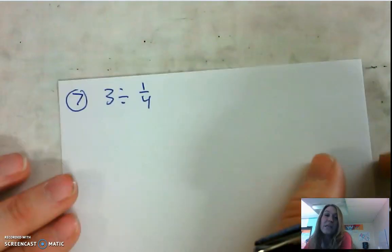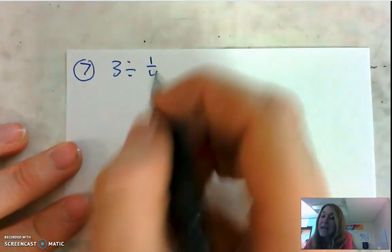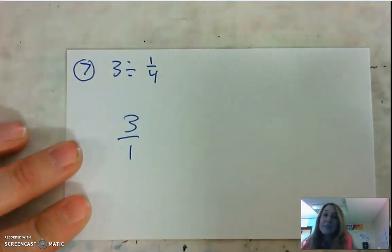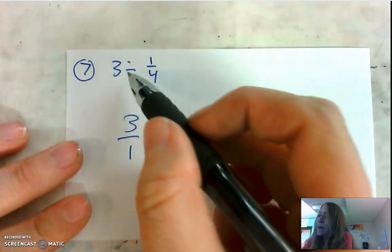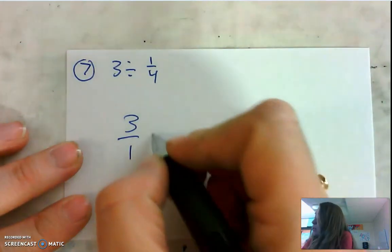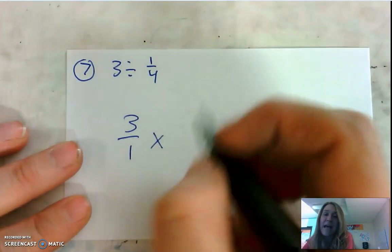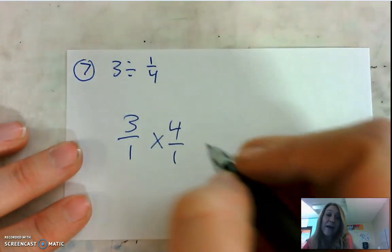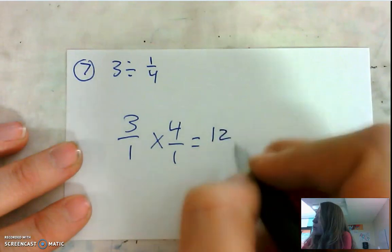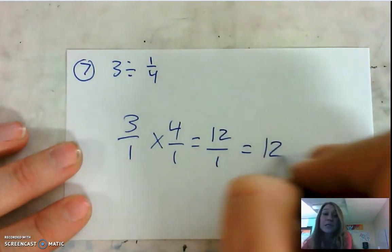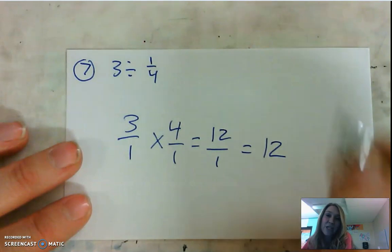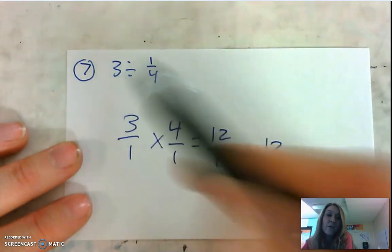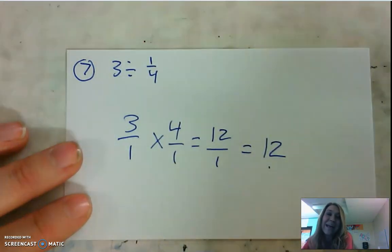Moving on now to the last two. Number 7 is a division problem. When we divide, we sing: keep the first fraction, keep it the same — ain't no reason to alter its name. Change the operation symbol, it says to divide — change it around, multiply this time. Flip the last fraction, flip it around — reciprocal works better, or so I have found. Multiply the numerators, multiply the denominators, simplify if necessary. That's how you multiply fractions. We check it by saying: if I start with a whole, I should end with a whole — and I did.